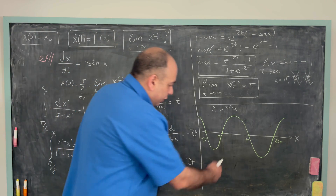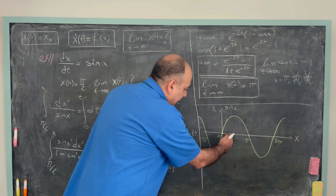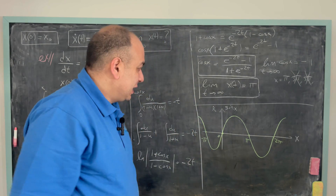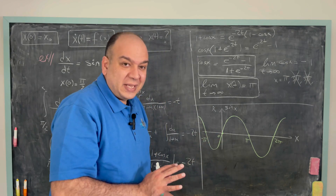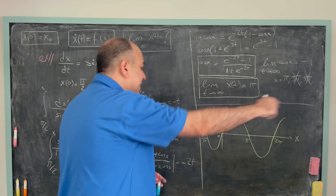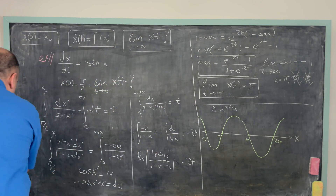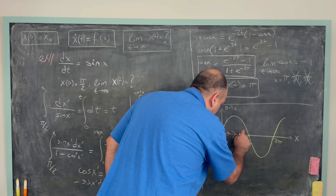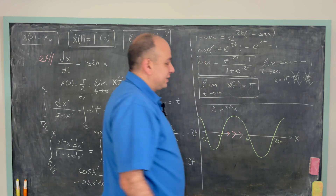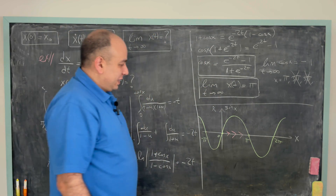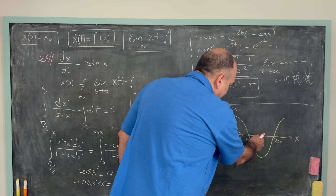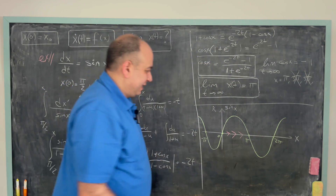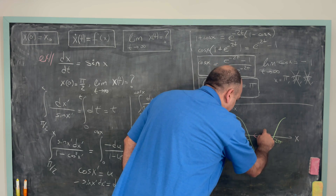Picking a point between 0 and π, x-dot is positive, so the fluid moves in the positive x direction — an arrow to the right. Between π and 2π, x-dot is negative, so the flow points to the left.